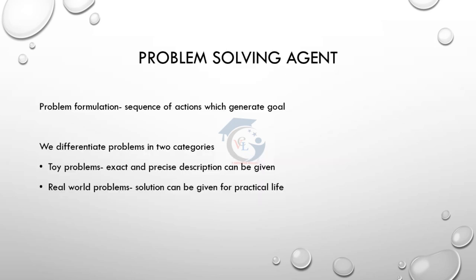For a problem-solving agent, the main component is problem formulation - the set of actions. There are two types of problems: toy problems and real-world problems. Toy problems have a precise description. For example, using this framework we can already practice with a chess game, which has specific moves, attack moves, and a description.